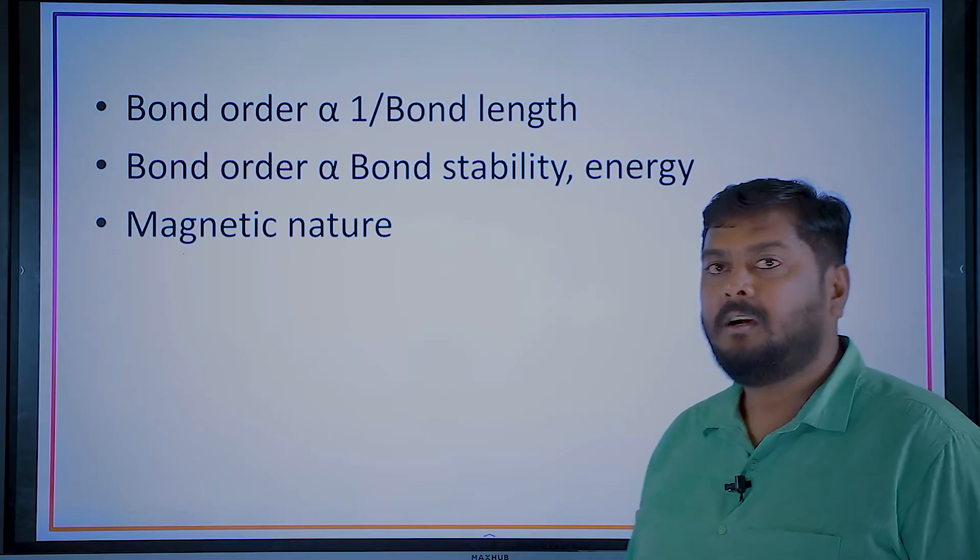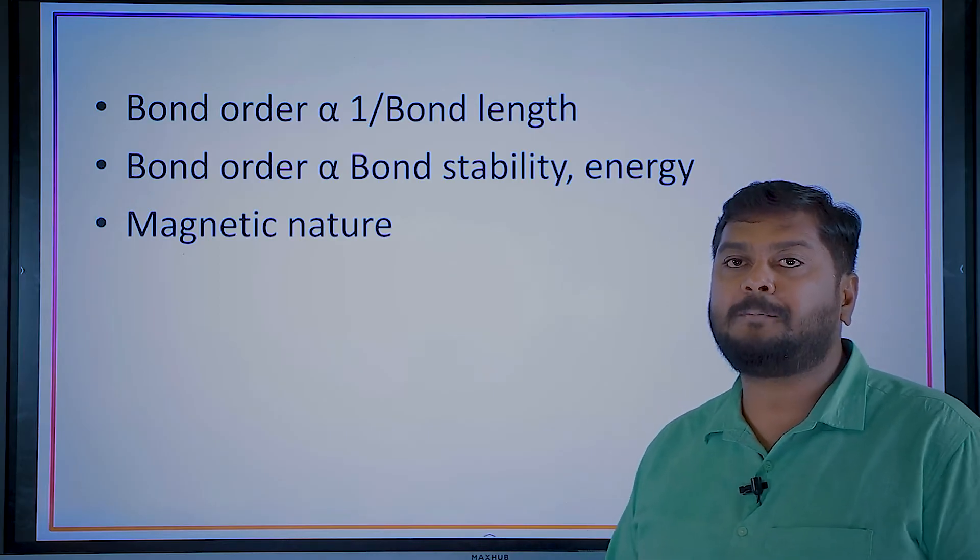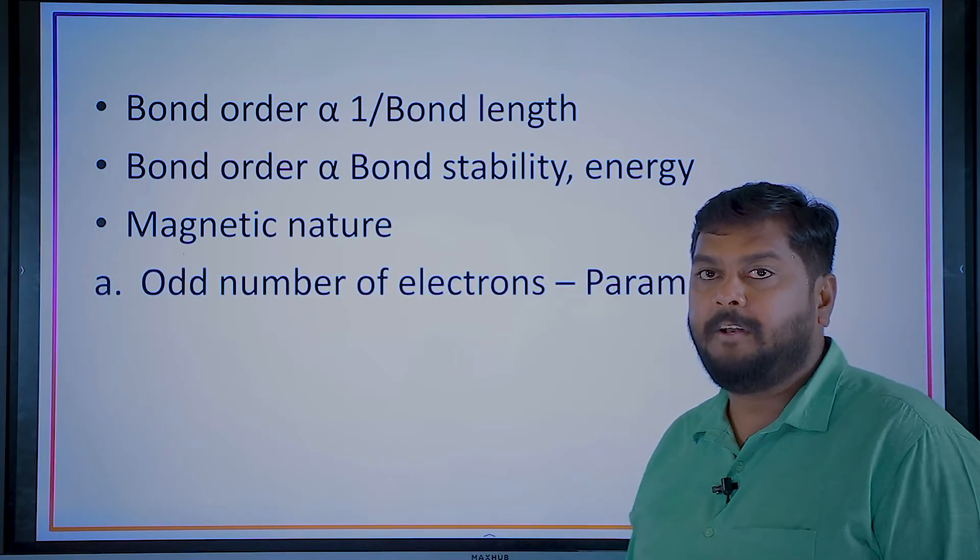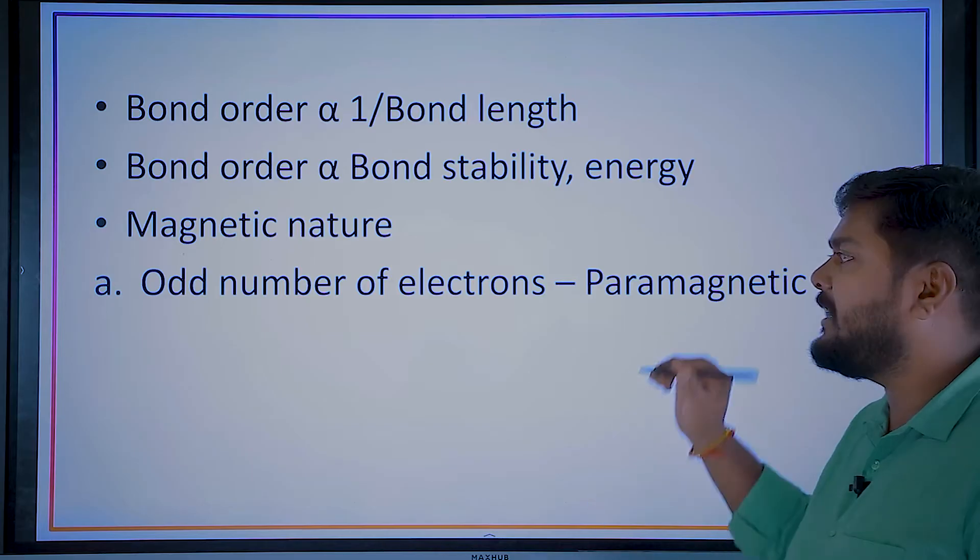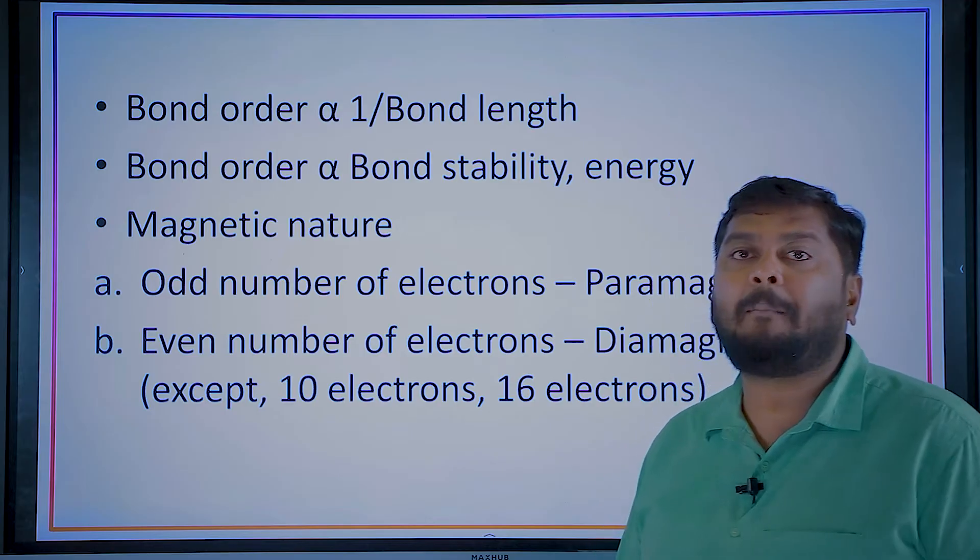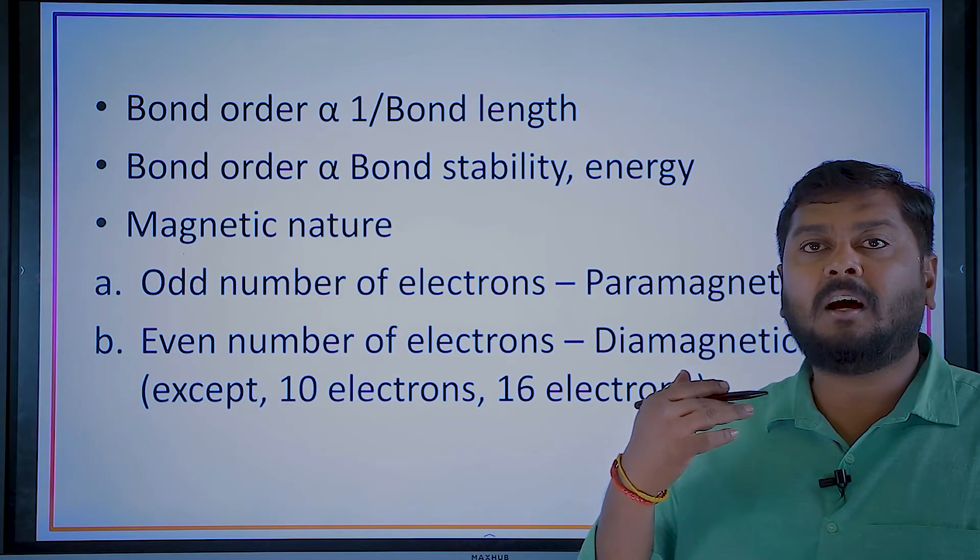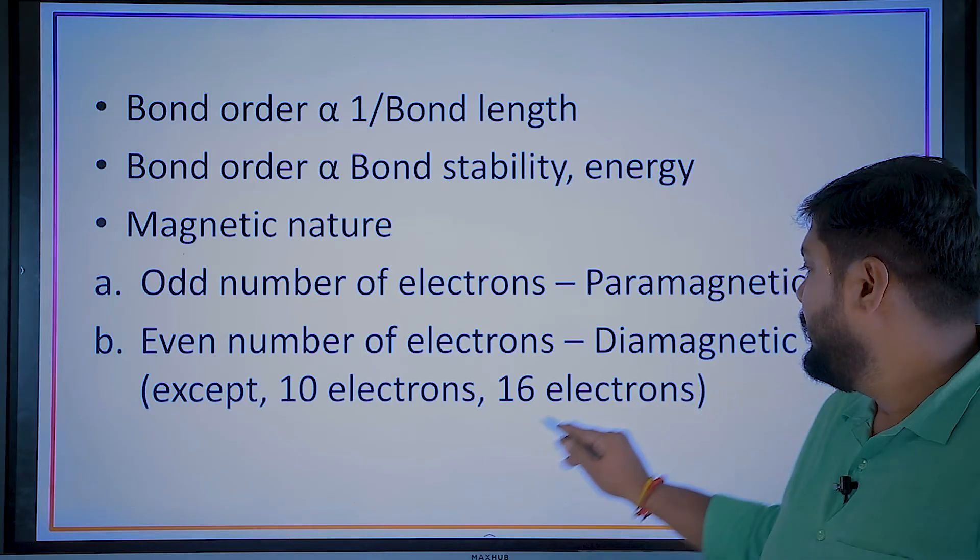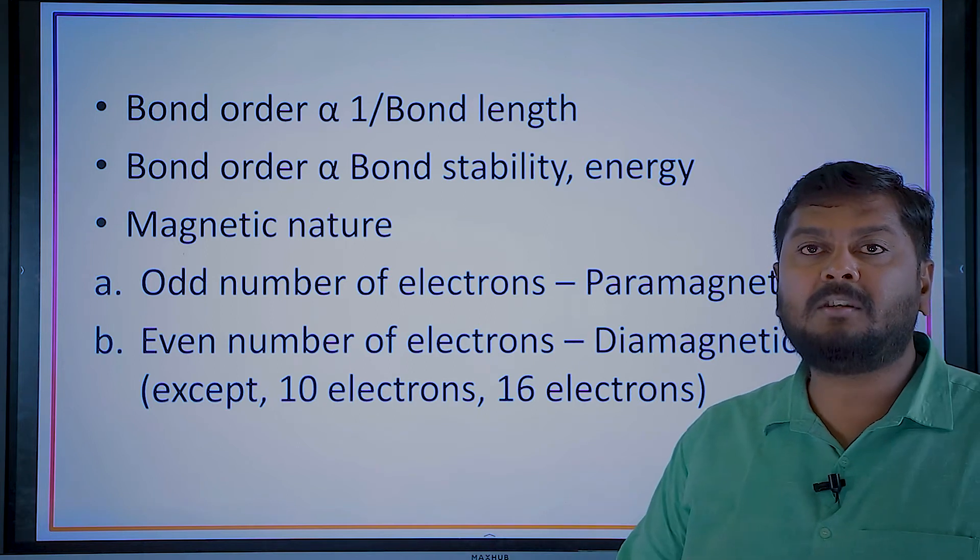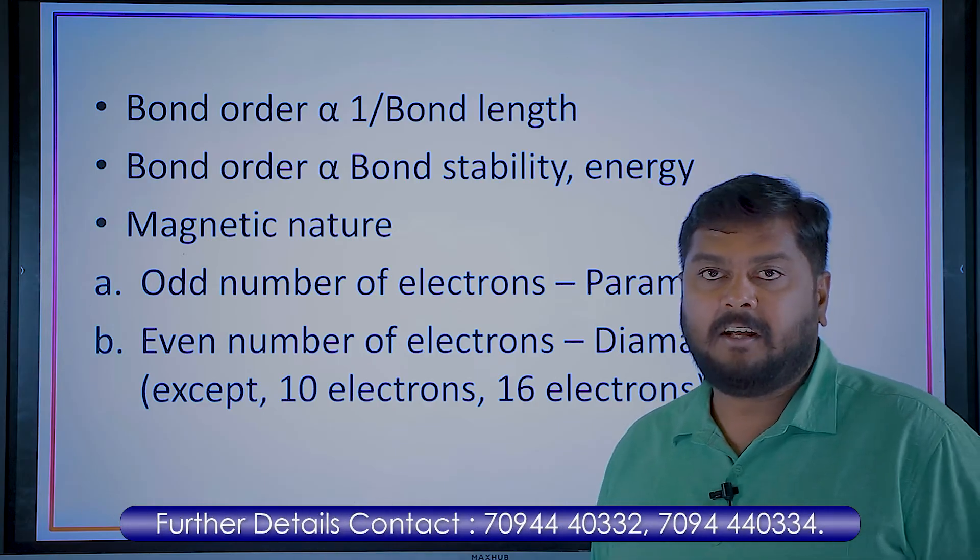Next concept is magnetic nature. Magnetic nature also depends on the number of electrons. If there are odd number of electrons, we can give it as paramagnetic. If there are even number of electrons, then it's diamagnetic. You can say all the even numbers are diamagnetic except the molecules with 10 and 16 electrons. Those are paramagnetic, rest will be diamagnetic.